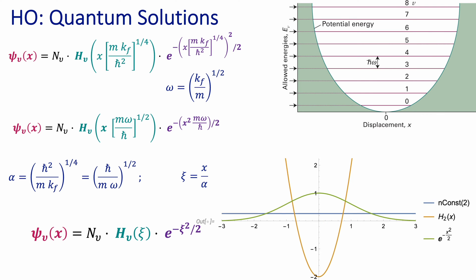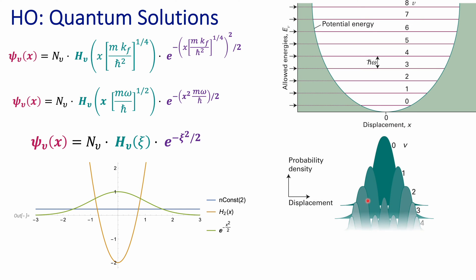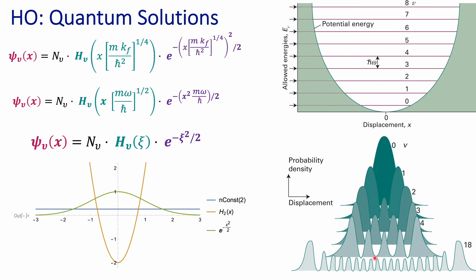Once you plot the probability density for the different states, every single one of those nodes is associated with the Hermite polynomial of that particular vibrational quantum number. You can also observe that for all distributions from principal quantum number 0, the ground state, all the way to the 18th excited state, the probability density always has symmetry around the equilibrium position for the vibration of your bond. That symmetric distribution is very important and will be handy when calculating certain properties of the system, like the average position or the average kinetic energy.